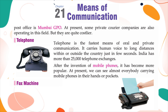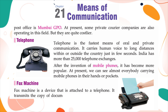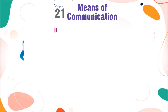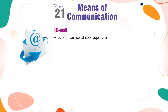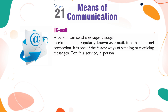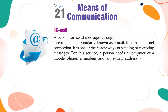Fax Machine: A fax machine is a device that is attached to a telephone. It transmits a copy of a document to another machine located anywhere in any part of the world by electronic means. It is very useful in offices. Email: A person can send messages through electronic mail, popularly known as email, if he has an internet connection. It is one of the fastest ways of sending or receiving messages. For this service, a person needs a computer or a mobile phone, a modem, and an email address which is known as an email ID.